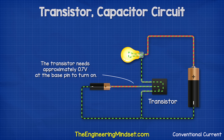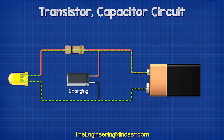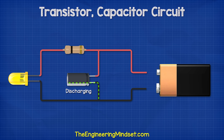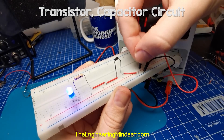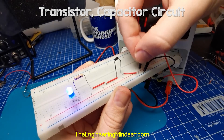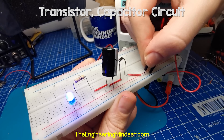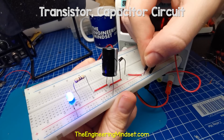The transistor needs around 0.7 volts at the base pin to turn on. We also need some capacitors, which basically charge up and store electrons when a battery is applied, but then release the electrons to power the circuit when the battery is removed. You can see here that when I remove the power supply, the LED turns off instantly. But when I connect a capacitor to the circuit, the capacitor powers the LED when the power supply is removed.